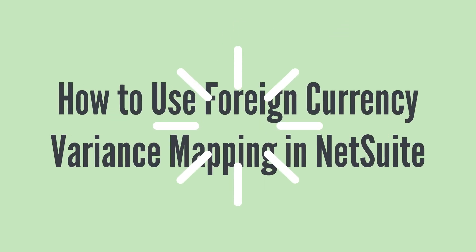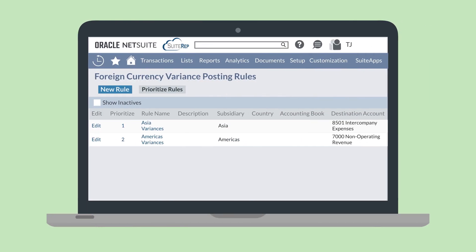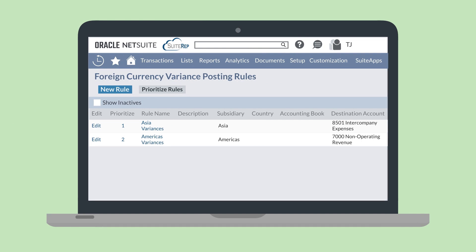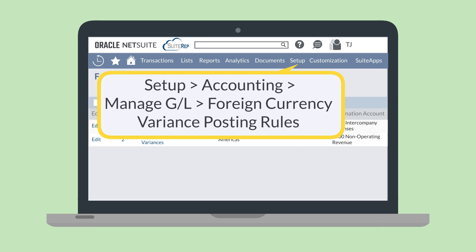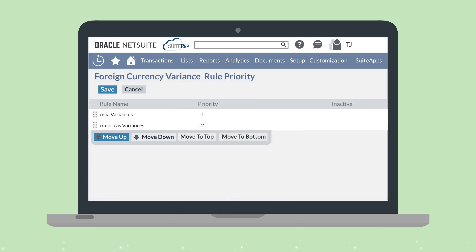Once you've set up the posting accounts and rules, let's take a look at your next steps. You'll need to prioritize your rules if there is any chance that a single transaction could fit under two different variance rules. To prioritize your rules, navigate to Setup, Accounting, Manage GL, Foreign Currency Variance Posting Rules. This will take you to the list of rules, where you select the Prioritize Rules button. You can use this priority page to adjust the priority of each rule. By default, the rules are prioritized in the order they were created, but you can use the Move Up, Move Down, Move to Top, and Move to Bottom buttons to make necessary adjustments.